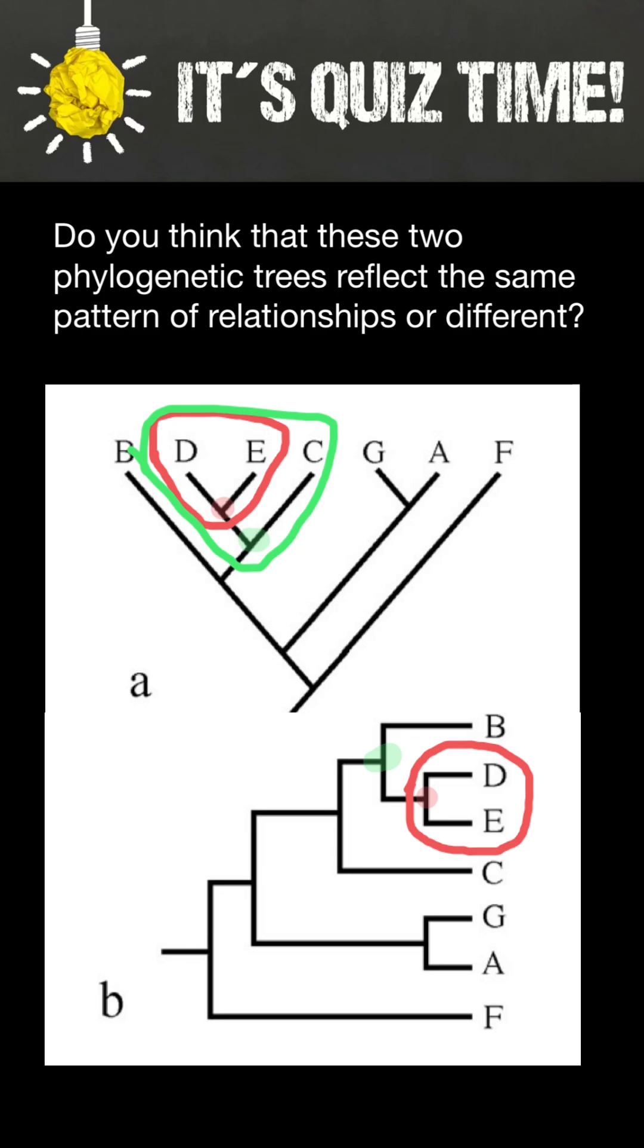But on the second graph, if we go down one step to the root, we will find that species are going to be different in the same clade: B, D, and E. Hence, the pattern of relationship is different.